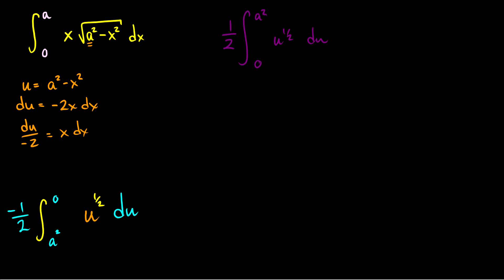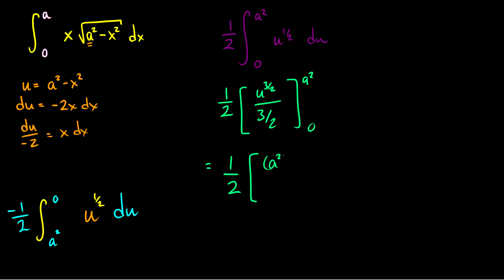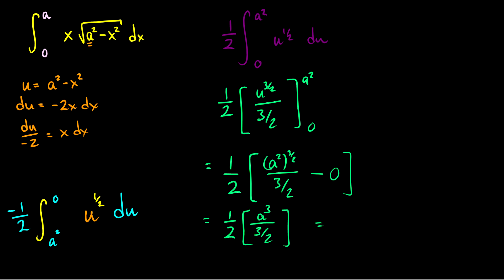Now we take our antiderivative: 1/2 times u to the 3/2 over 3/2, evaluated from 0 to a squared. Plugging in: this equals 1/2 times a squared to the 3/2 over 3/2, minus 0. Now a squared to the 3/2 is a to the 6/2, which is a to the 3. So we have 1/2 times a cubed over 3/2, which simplifies to a cubed over 3.